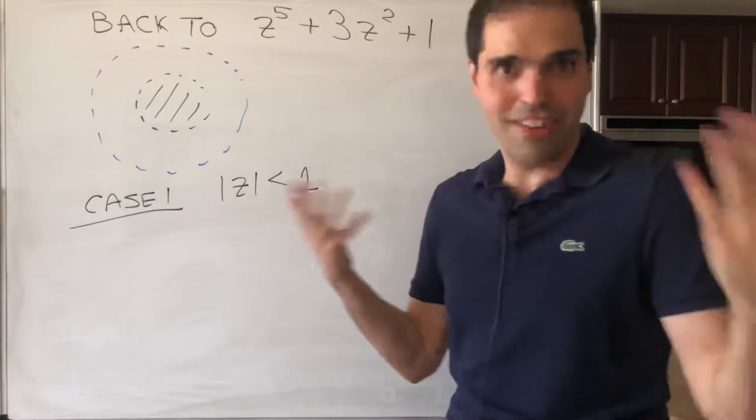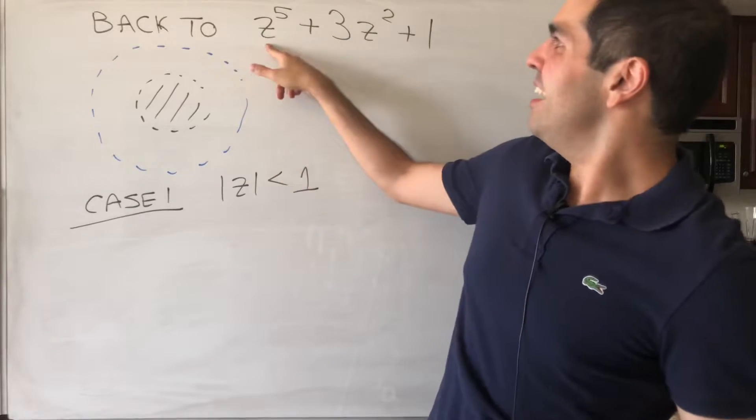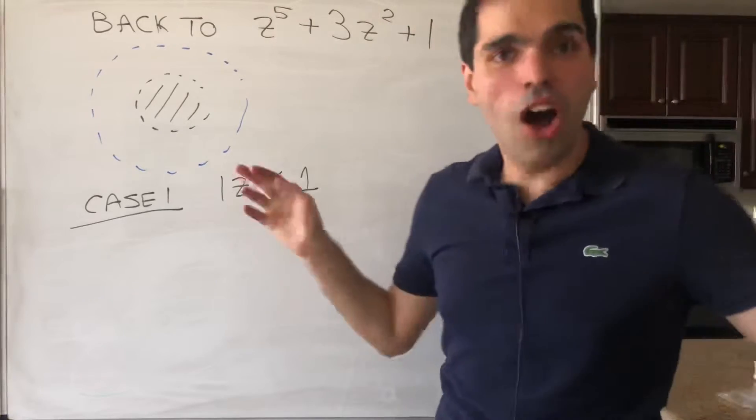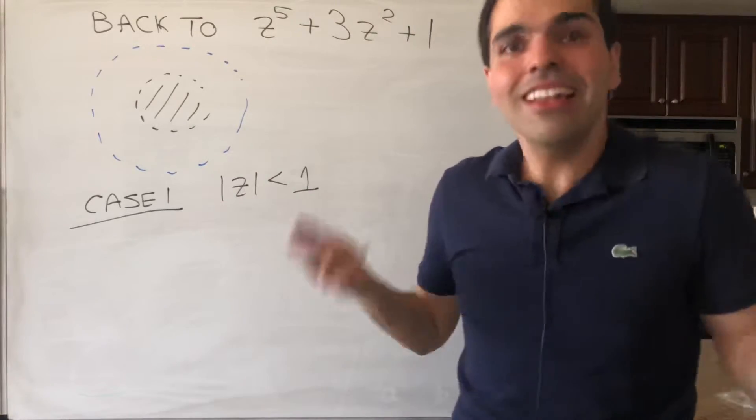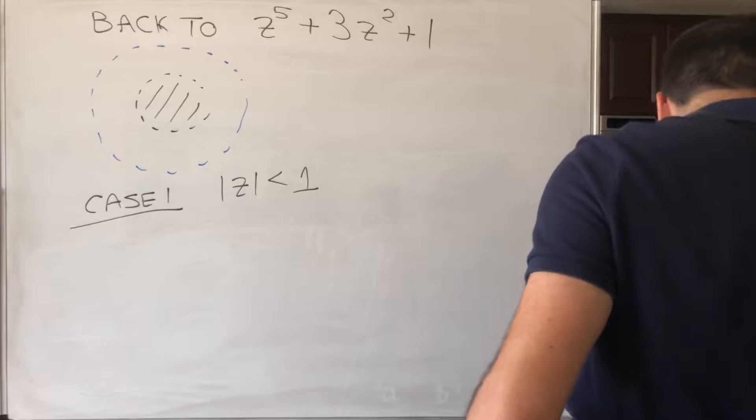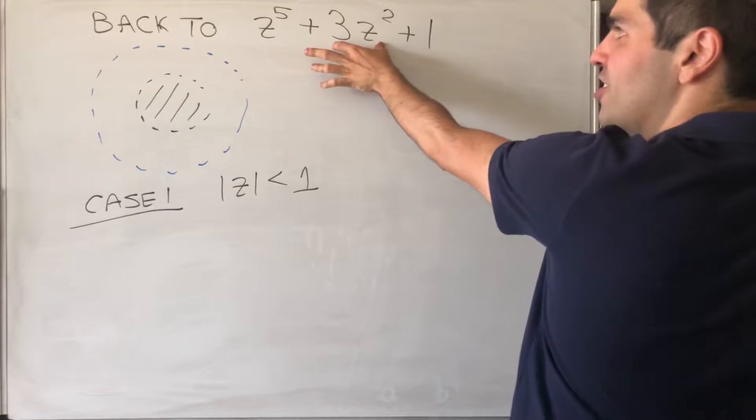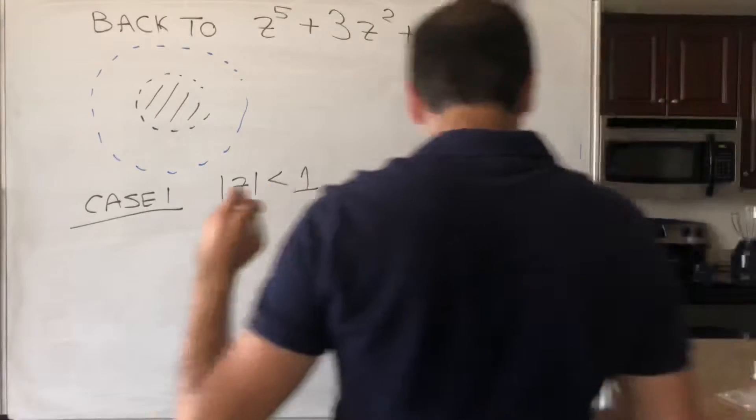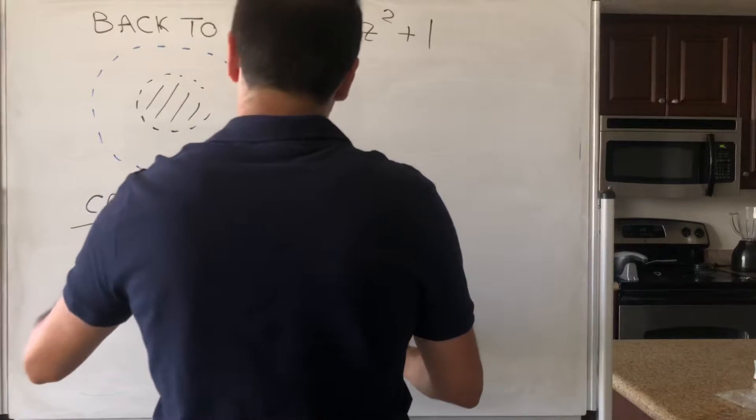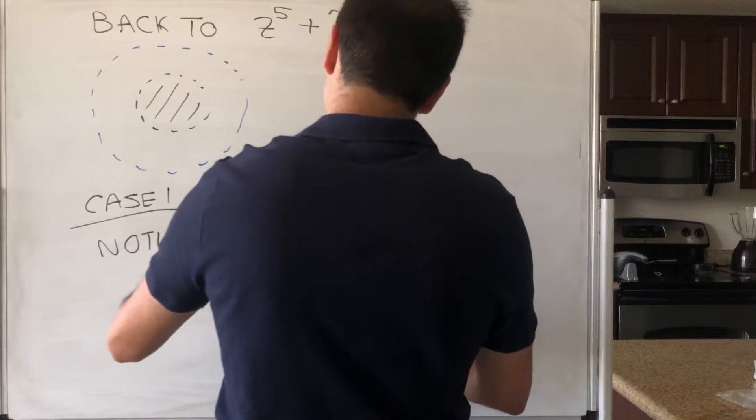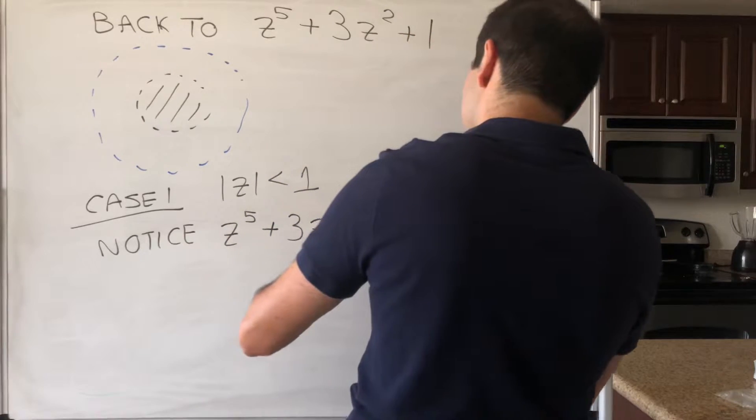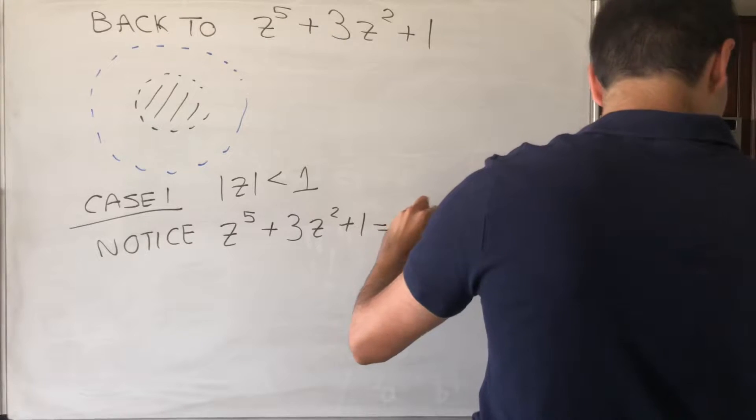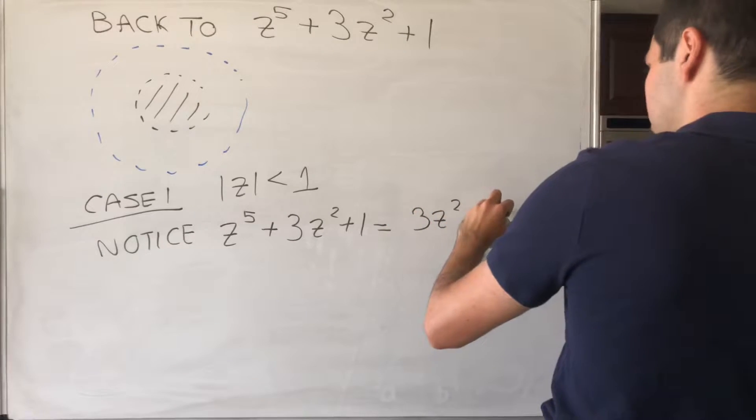So let's first try to figure out what happens in the inside disk. So case 1, let's try to figure out |z| < 1. And here's the thing. So Rouche's theorem, it's a very nice theorem, definitely, but it does involve a little bit of guesswork, because the question is, which is the dominating function? And well, it depends on the cases. Because it turns out here, the dominating function is the middle one, because probably of the coefficient of 3. So notice, z^5 + 3z^2 + 1, we can write this as 3z^2 + z^5 + 1.